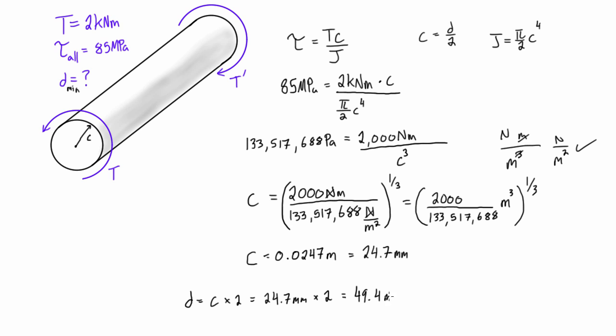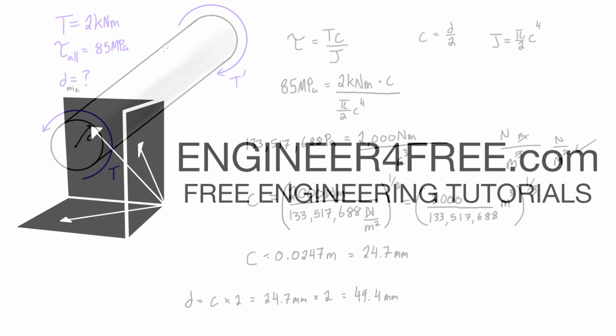So as long as this rod is 49.4 millimeters in diameter and we apply this twisting couple of 2 kilonewton meters on each side, then we'll be just hitting that allowable shear force. And providing that we have some appropriate safety factor, then everything will be a-okay.